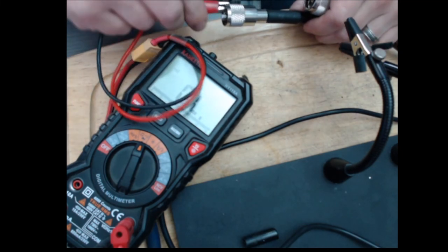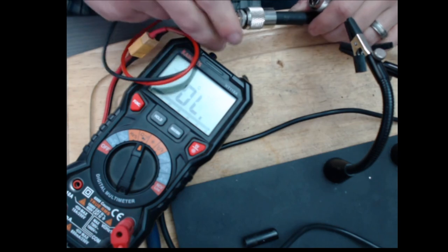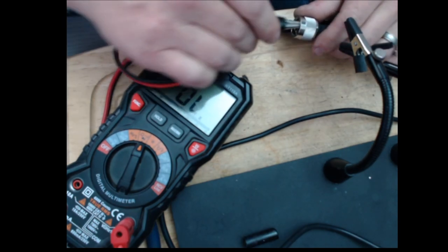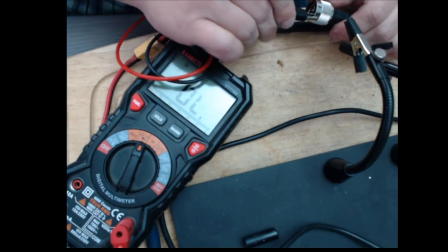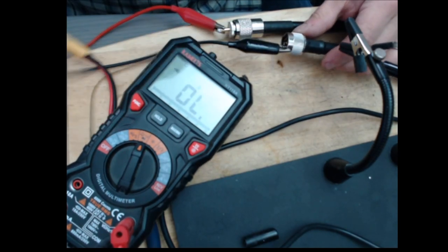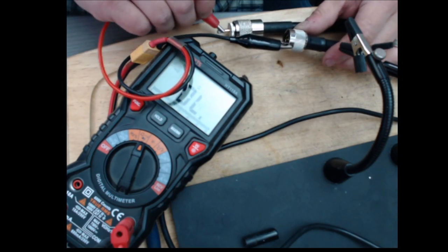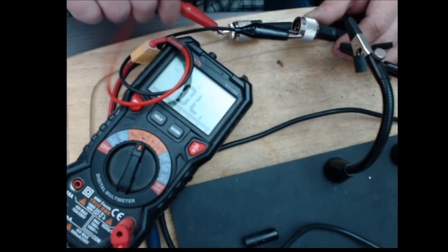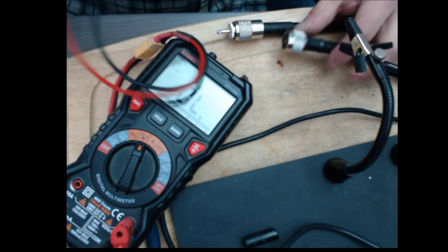And what you also want to check is go to your center conductor here and your outer conductor here, and you want to make sure that you don't have a connection. And so you want to see out of loop. And that's how you can test to just make sure that with a multimeter, that you don't have a short in your cable.